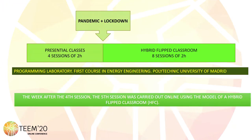Before the lockdown, it was possible to teach four presential classes of two hours each. During the lockdown, from the fifth class, the hybrid flipped classroom was applied.